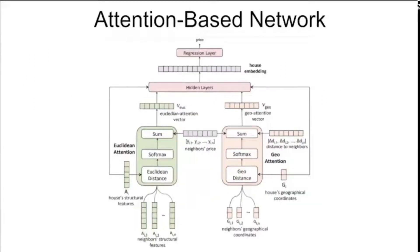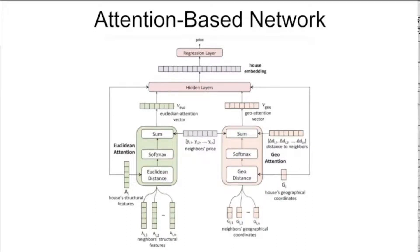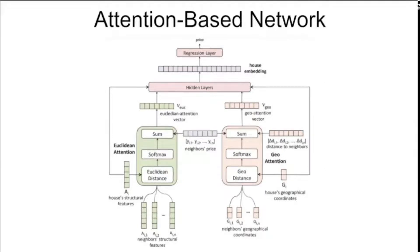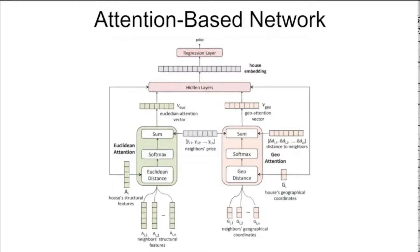Our solution is an attention-based network. This model performs spatial interpolation using as input the structural features and geo-coordinates of the house and its neighbors, and also the price of the neighbors. It has two branches: on the left there is the Euclidean attention branch that deals with structural features, and on the right the geo-attention branch that deals with geographical features. The Euclidean attention branch weights the importance of each neighbor based on how similar its structural features are to AI, the target house's structural features.